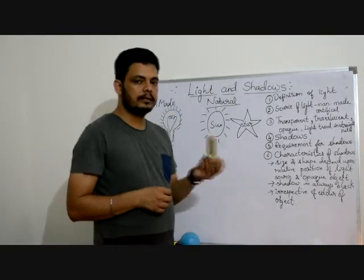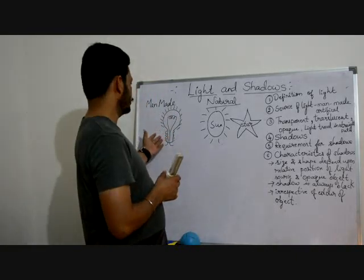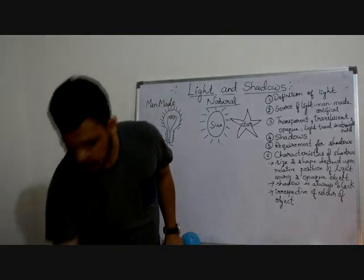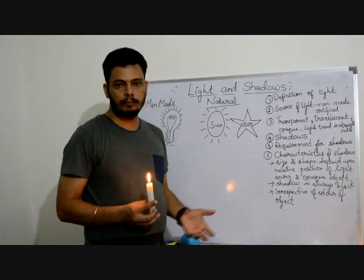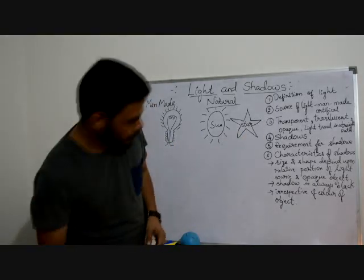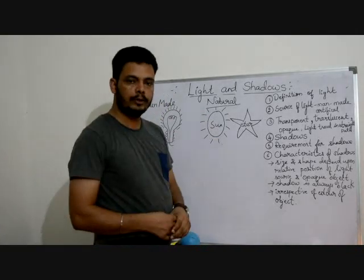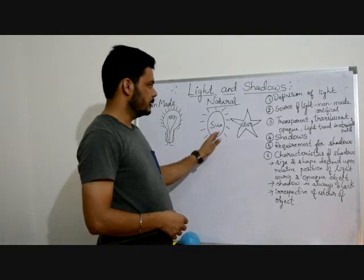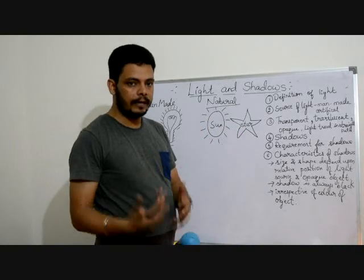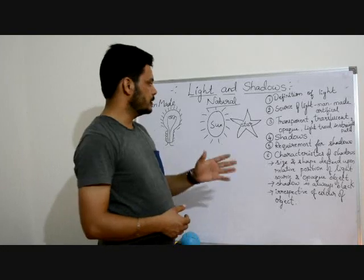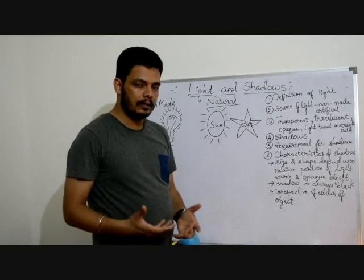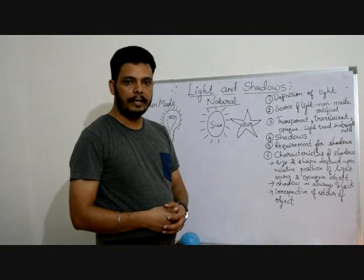Manmade sources include CFL, bulb, and candles — and there are a number of more manmade sources of light. Natural sources of light are the sun, stars, and if you talk about animals, there are fireflies, which we also call jugnu. These are also natural sources of light, and the light present in fireflies is also known as bioluminescence.